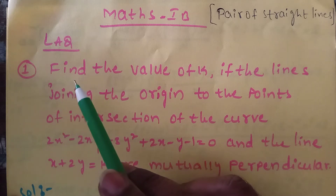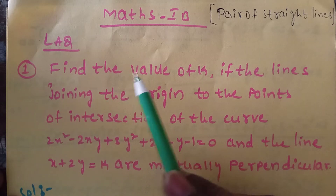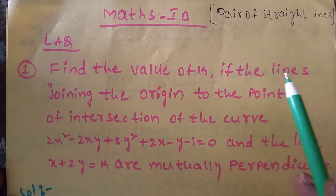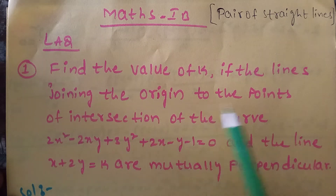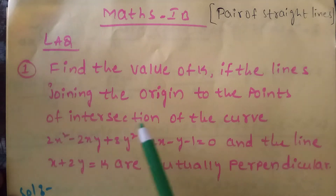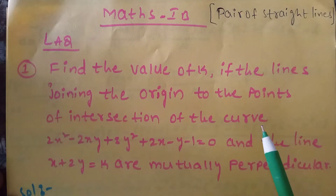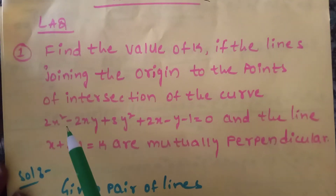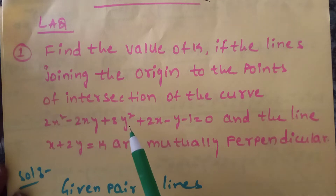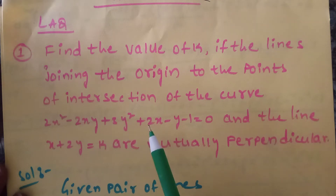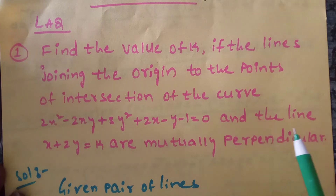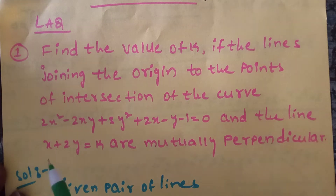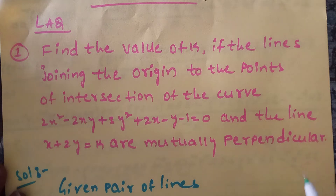See the question. Find the value of k such that the lines joining the origin to the points of intersection of the curve 2x² - 2xy + 3y² + 2x - y - 1 = 0 and the line x + 2y = k are mutually perpendicular.